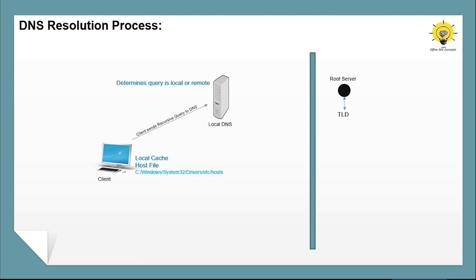The DNS server will first identify whether the name the client is trying to access is a local name or a remote name. If the client is trying to access a file server or a local application, the DNS server will already have records for those names. But if the client is trying to access a remote application or external website, the DNS server will not have those records. Then DNS server will check its own local cache. If this DNS server had resolved this name before, it will have an entry saved in the cache — for example, if a different user had accessed google.com earlier. So DNS will send the resolution back to the client.